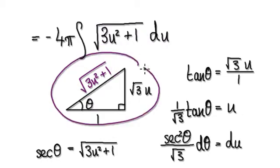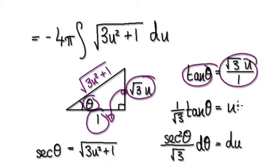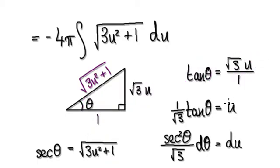If you make your triangle to be like this, then tan θ would be opposite over adjacent. So u would then equal (1/√3) tan θ.